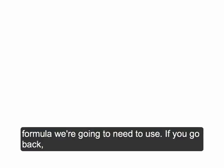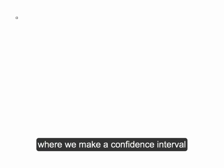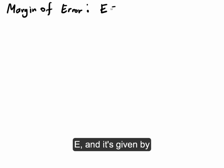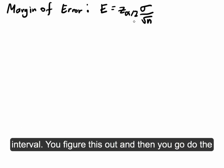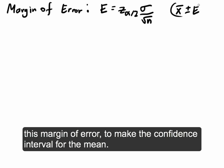There's a particular formula we're going to need to use. Going back to what we've done in this section, when you make a confidence interval, you get to this thing called the margin of error. The margin of error is usually represented as E, and it's given by Z alpha over 2 times sigma over the square root of N. That's the normal formula when you build a confidence interval — you figure this out and then do X-bar plus or minus this margin of error to make the confidence interval.